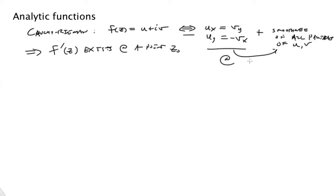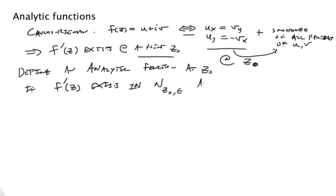Where here we're taking it at some specific point that we're interested in, z0. Okay, so we actually define now an analytic function at z0, if f prime of z exists in some neighborhood of z0, and f prime itself exists at z0.